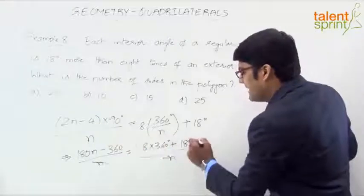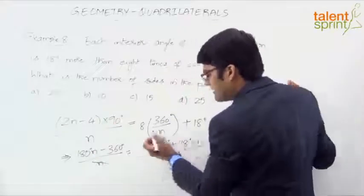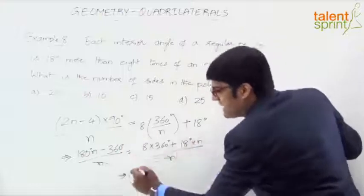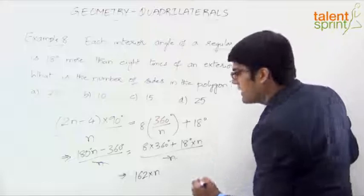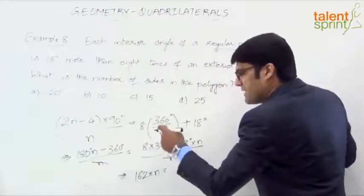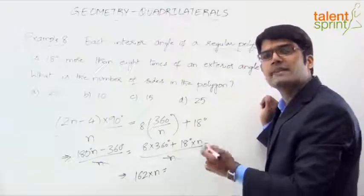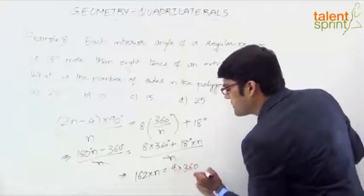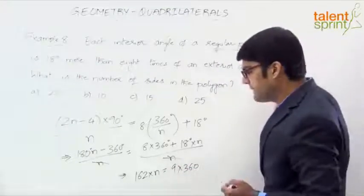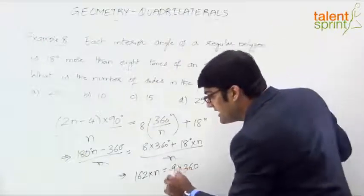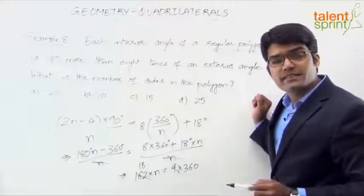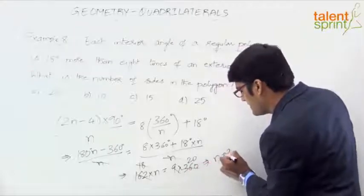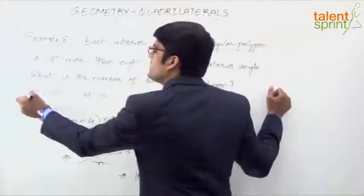Continuing the simplification: 162n = 9 × 360. Taking 360 common on the right gives 9 × 360. Since 162 is divisible by 9 — 9 goes 18 times — we get 18n = 360, and 18 goes 20 times into 360. So n = 20. The number of sides is 20, which is option A.